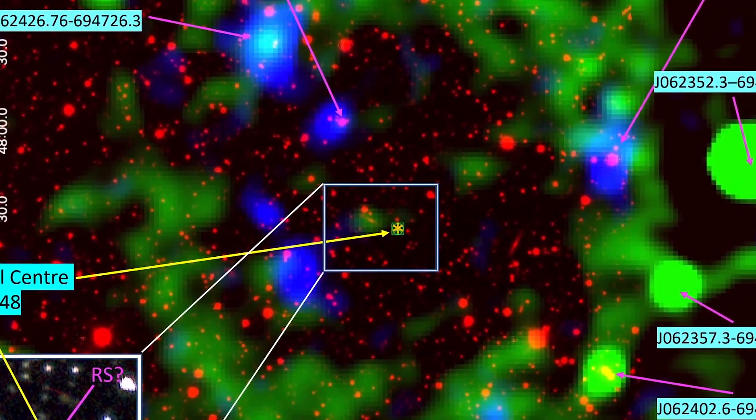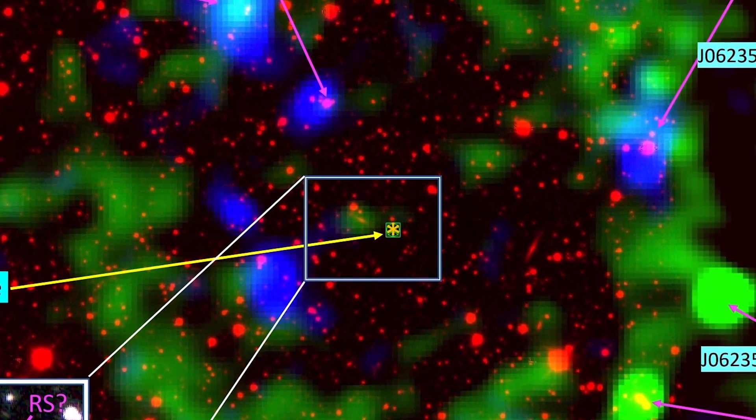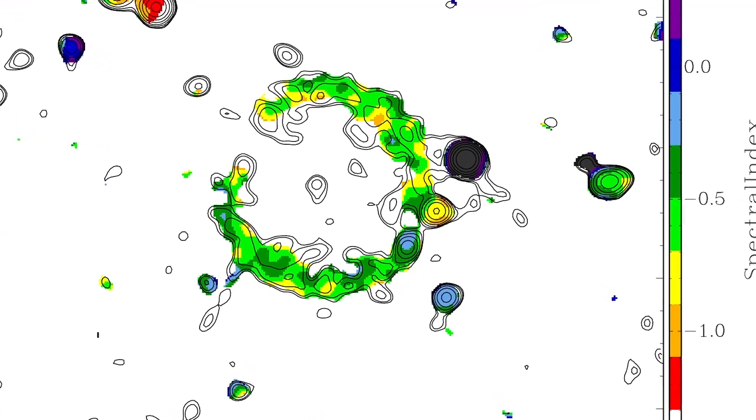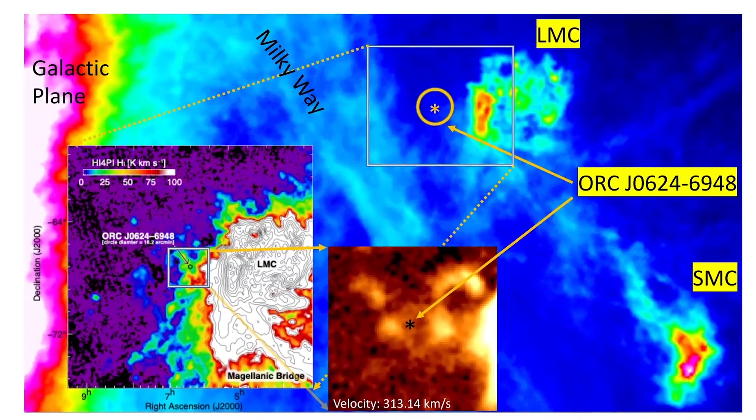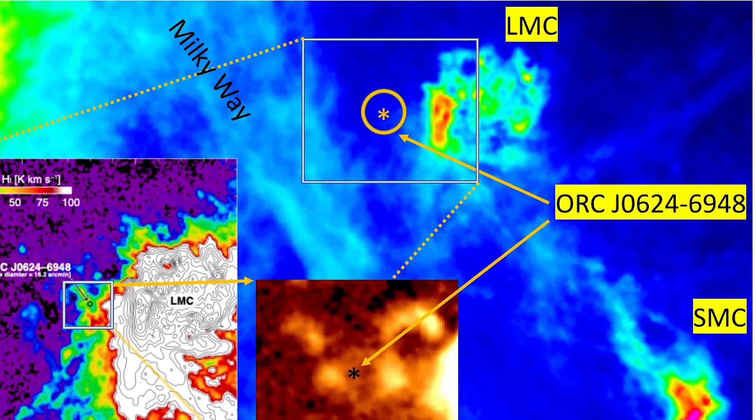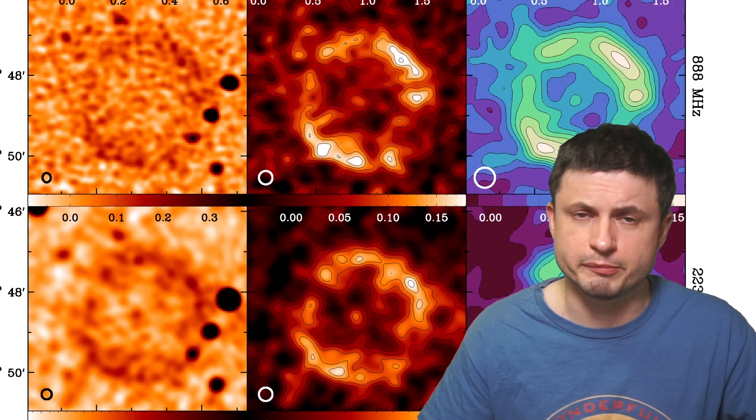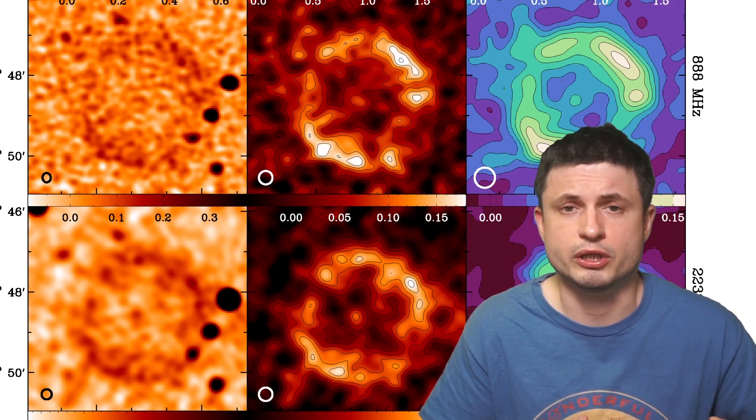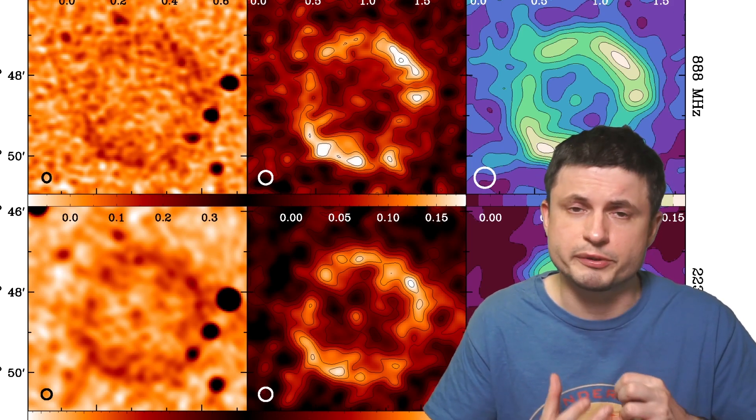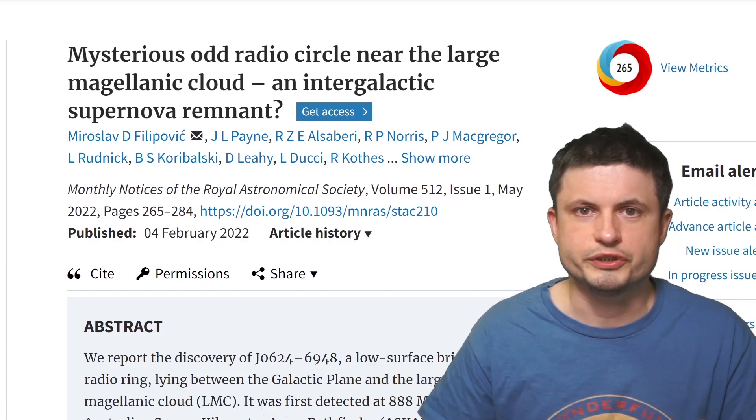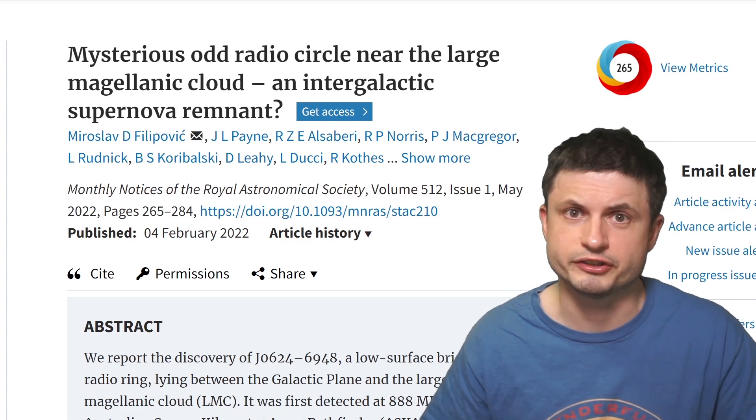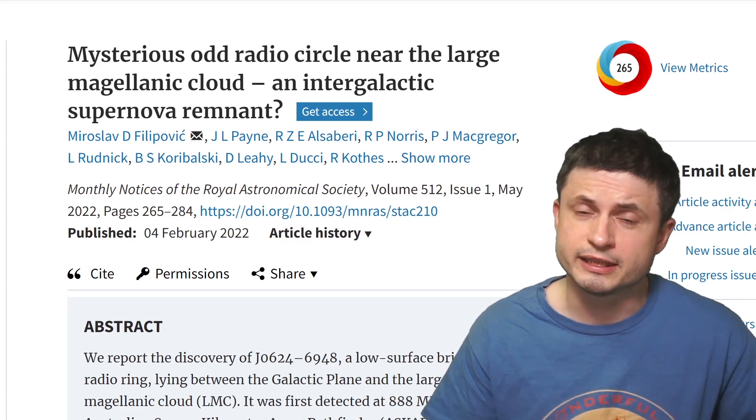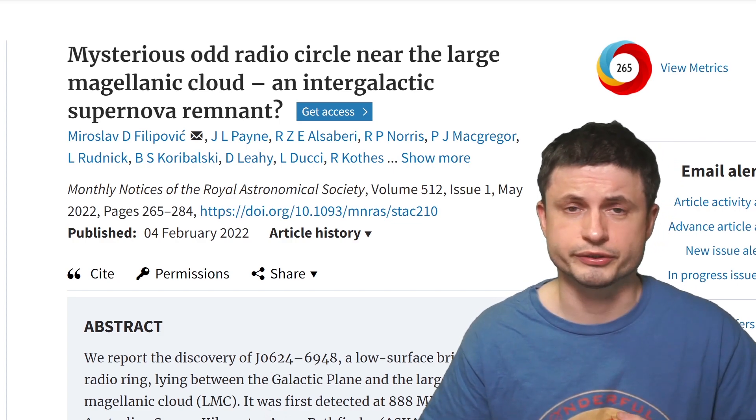But not all ORCs were created equally. As a matter of fact, several ORCs discovered in the last year or so, such as the one in this study, did not really have anything in their center and also possessed slightly different features. Some of them were in the middle of nowhere next to pretty much nothing, which naturally presented a bit of a new mystery. It meant that certain odd radio circles were even odder or represented an entirely different way of producing similar objects, which is precisely what this new study by the same scientists behind the ORC study decided to tackle.